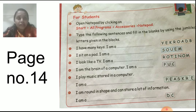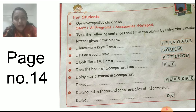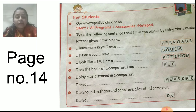Next: I look like a TV. I am a monitor — M-O-N-I-T-O-R. Write it down. Next: I am the brain of a computer. I am a CPU — C-P-U. The jumbled letters given are P-U-C, make it correct: C-P-U.